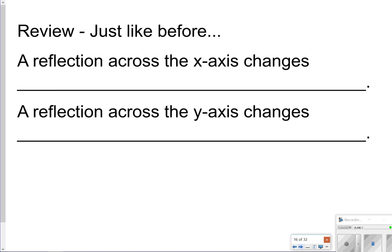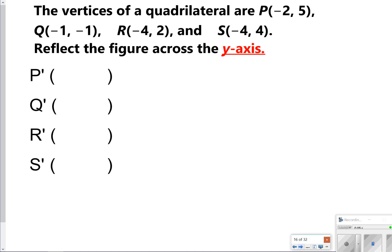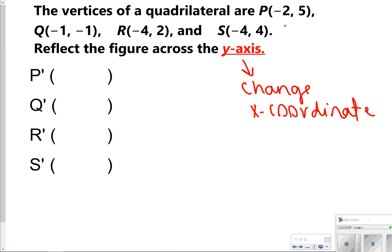The next part is a review from lesson 11.0. When you reflect across the x-axis, that changes the y-coordinate. When you reflect across the y-axis, that changes the x-coordinate. So reflecting across the y-axis: P at (−2, 5) becomes P prime at (2, 5); Q prime is (1, −1); R prime is (4, 2); and S prime is (4, 4).